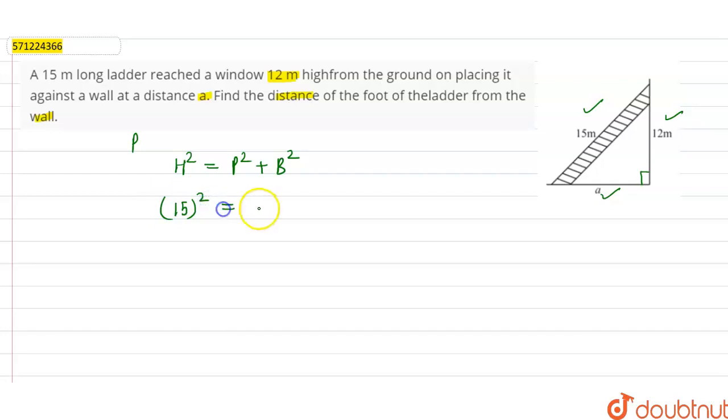So 15 square will be equal to perpendicular, that is 12, so 12 square plus base square. Base is a, we have to find the value of a. So 15 square is 225, and 12 square is 144 plus a square.